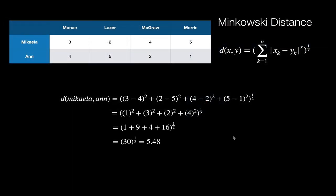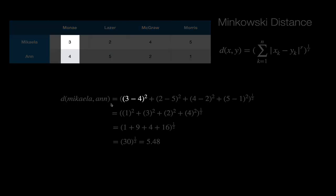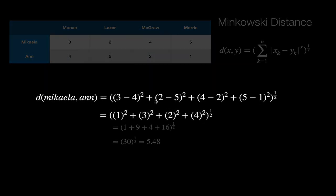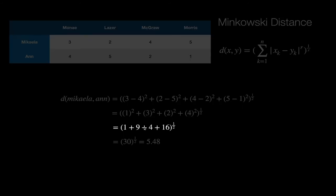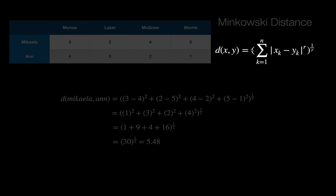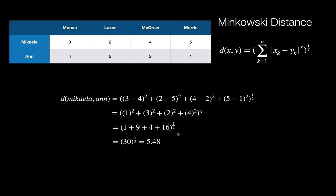Let's take a look at that Minkowski distance with r of two. Here's Michaela and Ann, that's what we're trying to find the distance of. We just plug this in: three minus four squared, two minus five squared, four minus two squared, and five minus one squared. Three minus four is one, that's three, four minus two is two, five minus one is four. Then we square each one and finally we get thirty, take the square root of it and we get 5.48. This looks really complex perhaps, but in reality it is super simple. It's just applying the general rule of how to do the distance.